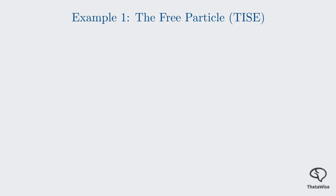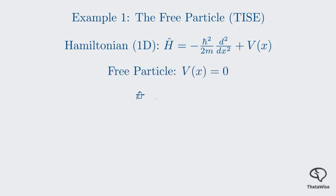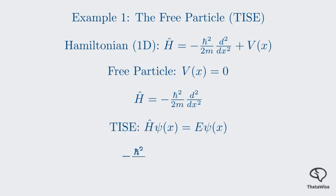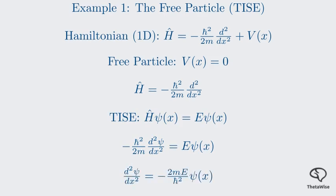The Hamiltonian for a single particle in 1D is Ĥ equals negative ℏ² over 2m times the second derivative with respect to x, plus the potential V of x. The first part is the kinetic energy operator, and the second is the potential energy. Since V of x is zero for a free particle, our Hamiltonian is just the kinetic energy term. Now we substitute this into the TISE Ĥψ equals Eψ. This gives us a second order linear differential equation to solve.